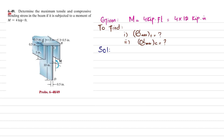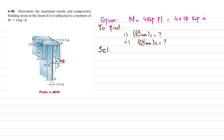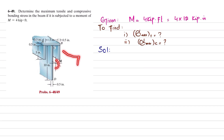Welcome back. Problem 6-49: determine the maximum tensile and compressive bending stress in the beam if it is subjected to a moment of 4 kip-feet. So this moment applied on the beam is 4 kip-feet and we have to find the maximum tensile and compressive bending stress. Due to this load, the beam will bend such that the upper surface will be in compression while the lower surface will be in tension.